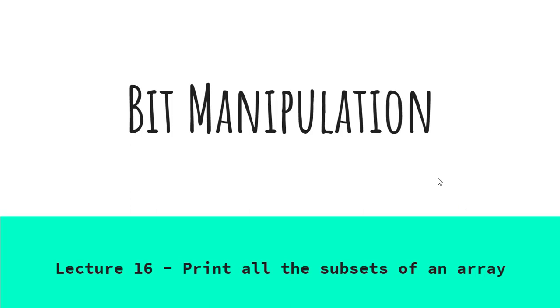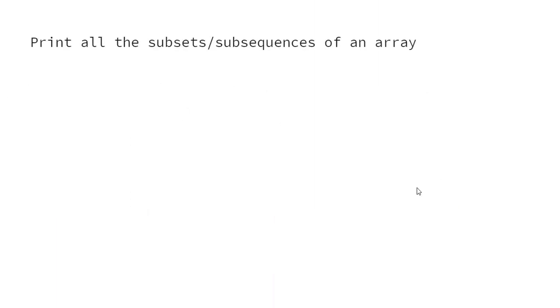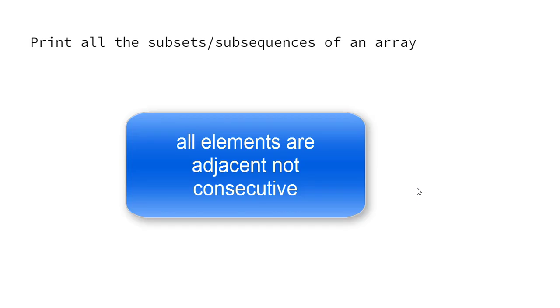Let's look at what the problem is. You need to know that subsets and subsequences are the same thing. But a subarray is different — a subarray is also a subsequence, but it is a special kind of subsequence in which all elements are consecutive.